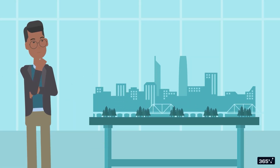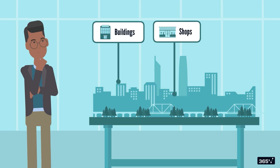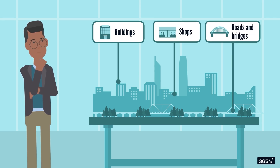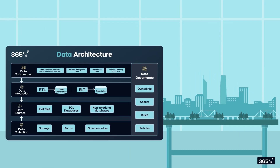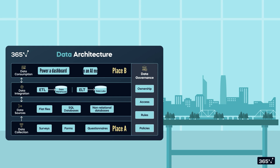If you were planning a city, the key components would include buildings where people live and work, shops to ensure necessary supplies, and roads and bridges to connect all these pieces. This is exactly how a data architecture blueprint works — it ensures there is a place to store data, and there are pipelines or roads to flow data from place A to place B, either within an organization or outside, powering dashboards, AI models, or even your food delivery order.